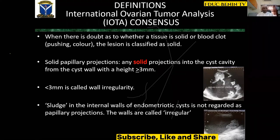If you are in doubt whether the lesion is blood clot or solid tissue, there are two things you can do. You can push the lesion using a transvaginal probe — if it moves, that suggests blood clot. When you apply color, blood clot will not take color. This way you can differentiate between blood clot and solid tissue.